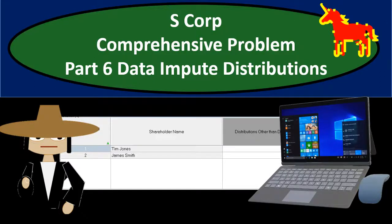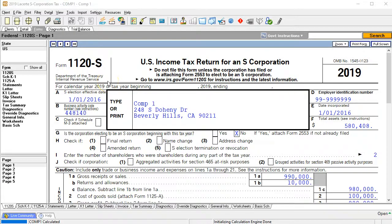In this presentation we will continue with our comprehensive S corporation problem, Part 6. Here we're going to do the data input related to distributions within Lacerte tax software. Lacerte is owned by Intuit, the owner of QuickBooks. The data input process and generating of forms will be similar to other types of software as well. We will have the actual tax forms if you want to use them, which can also be found on the IRS website at irs.gov.